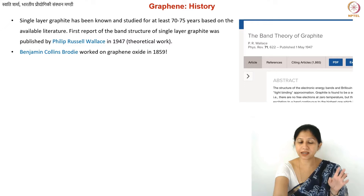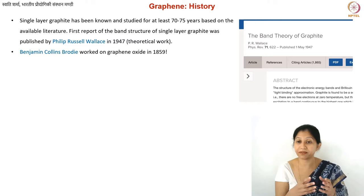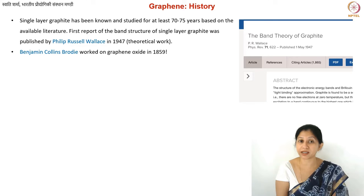The first time it was studied — not necessarily what you call graphene nowadays — but what is known as graphene oxide and reduced graphene oxide, was studied by Benjamin Brody in 1859. The first paper on the electronic properties of single layer graphite was published in 1947.